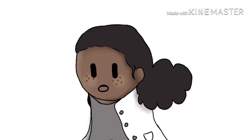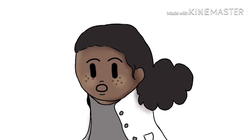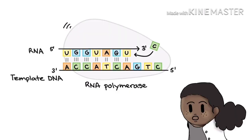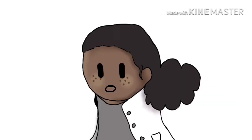Transcription is the first step in gene expression. It involves copying a gene's DNA sequence to make an RNA molecule. Transcription is performed by enzymes called RNA polymerase, which link nucleotides to form an RNA strand using a DNA strand as a template. There are three steps in transcription.